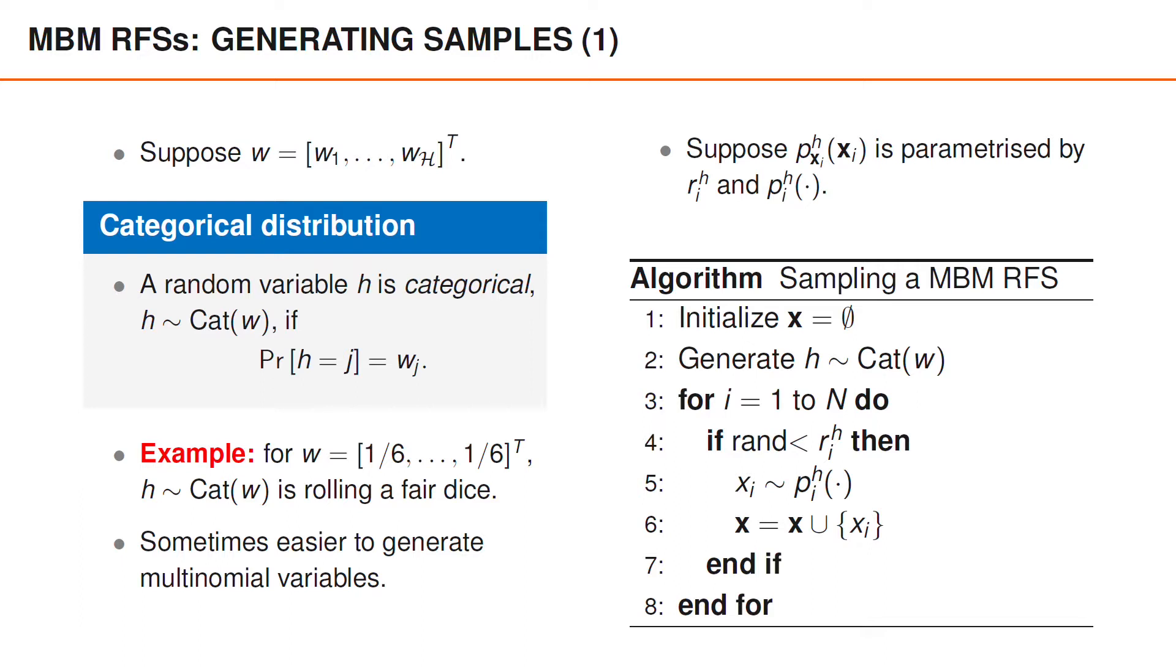We then randomly select one of the hypotheses by generating H from a categorical distribution, with the weight vector W as parameter vector. Given H, we then generate a sample from the multi-Bernoulli random finite set number H. We essentially do that using the algorithm from the multi-Bernoulli video. That is, we loop through all the N Bernoullis using a for loop that runs from i equal 1 to capital N.